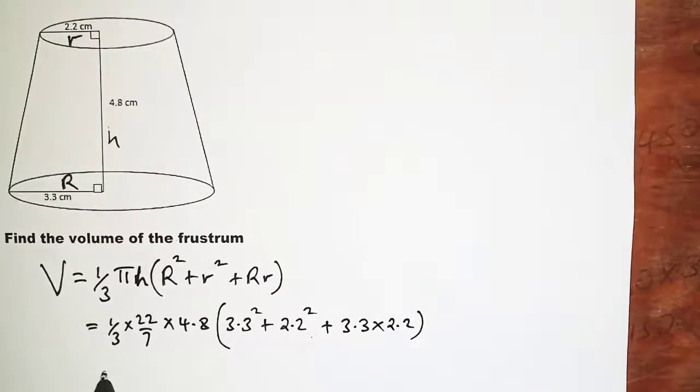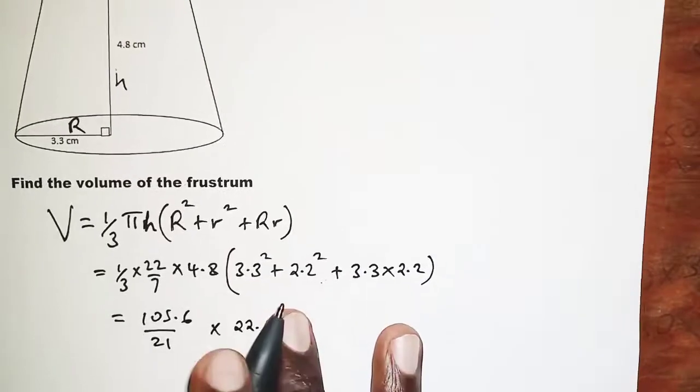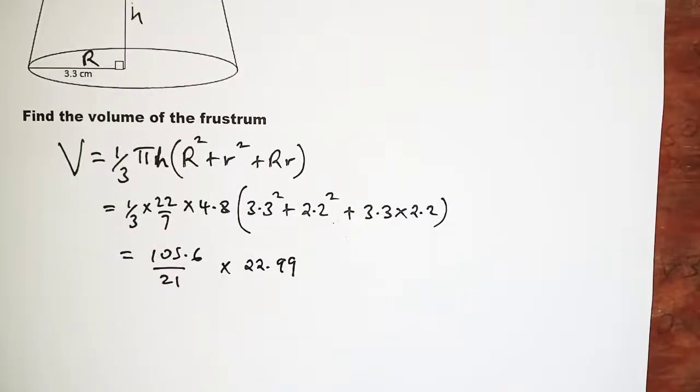This worked out should be 105.6 over 21 times 22.99 when we work out that part. And finally, this gives us 115.61 cubic centimeters.